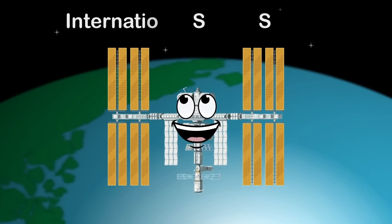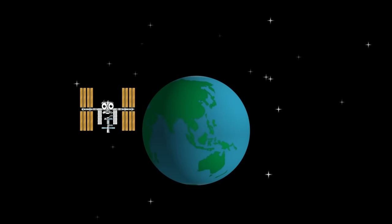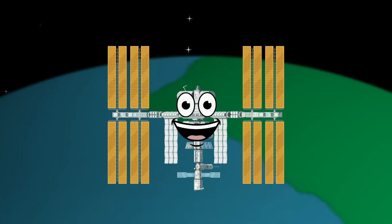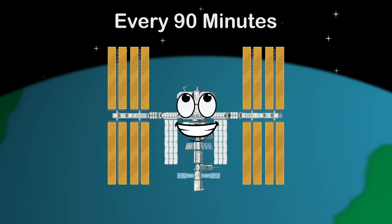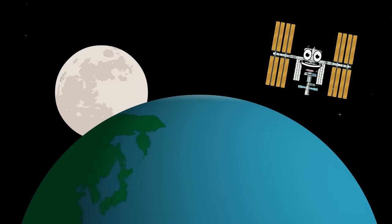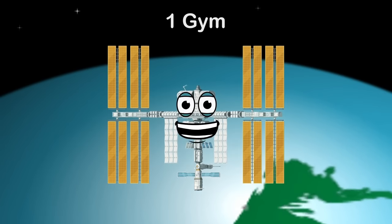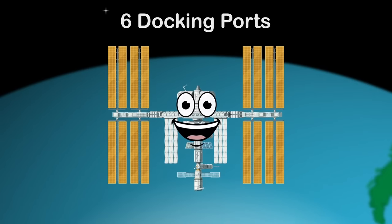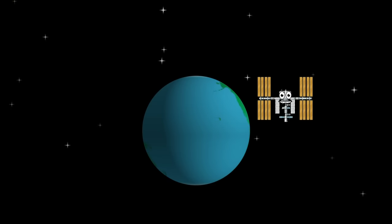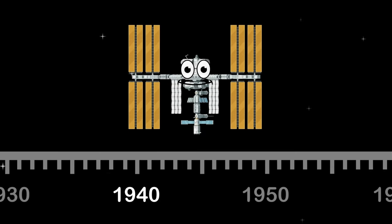I'm the ISS, the International Space Station. 1998 was the year my construction began. I make multiple orbits around the Earth every day. I fly around the world every 90 minutes, orbiting the Earth 16 times in 24 hours. I'm 357 feet long from end to end. I'm the second brightest object in your sky after the moon. I have two bathrooms, one gym, six sleeping quarters, and six spaceship docks. The idea of the space station was science fiction until the 1940s.